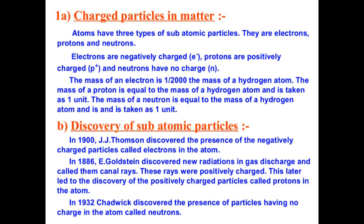We are going to study a very important theory which proved to be a milestone in chemistry. First, let's revise what we learned before his experiment. We have studied the charged particles in an atom. Atoms have three types of subatomic particles: electrons, protons, and neutrons. Electrons are negatively charged, whereas protons are positively charged.